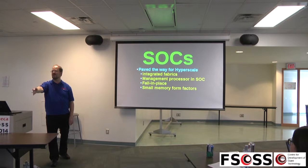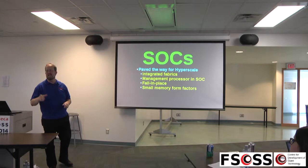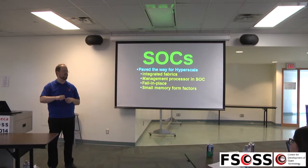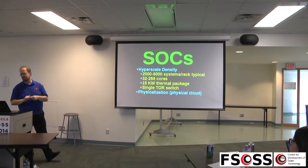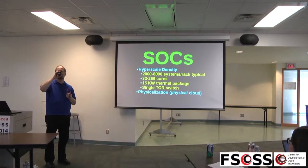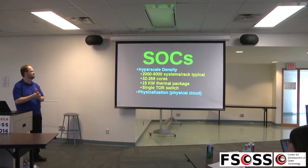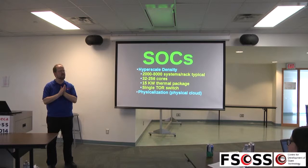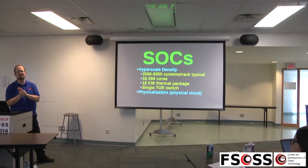Small memory form factors became important — when you've got this kind of density, the size of your memory chips becomes significant. Package-on-package is great; small modules off to the side work as well, but the physical size of memory became quite an issue with hyperscale. The hyperscale density in 2020 to 2025 is 2,000 to 8,000 systems per rack, depending on the thermal profile and what coprocessing units are present. Core count is in the 32 to 256 range — back in your time systems were quad or octa core, with announcements of 48 and 96-core systems just appearing. Cavium was about to introduce a 96-core system.